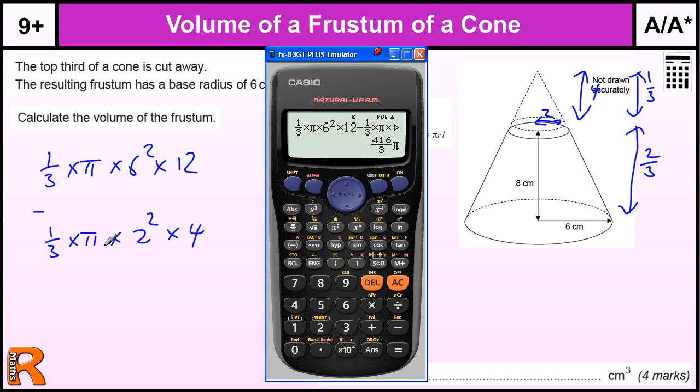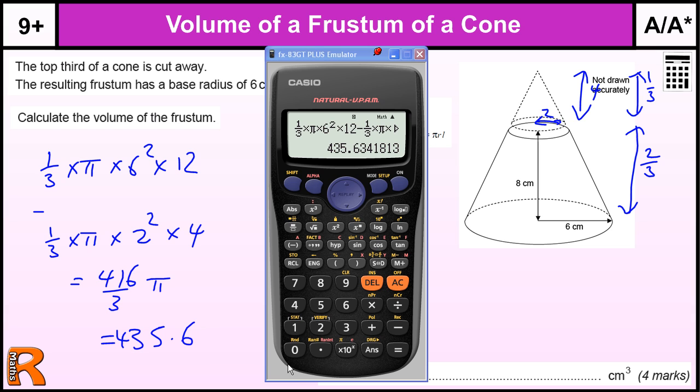And that gives us 416 over 3 pi, which is not a very nice value. If we change it to a decimal we get 435.6 to one decimal place.